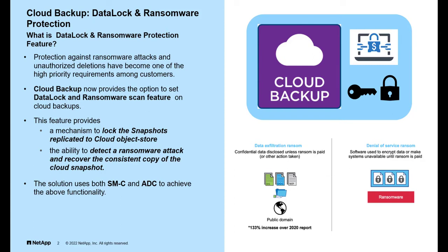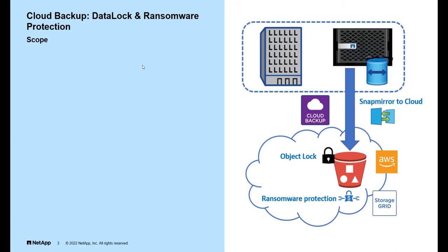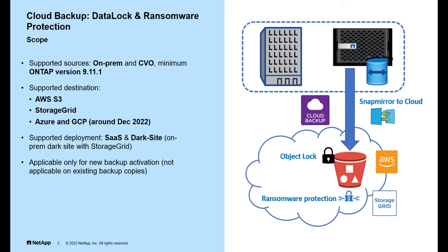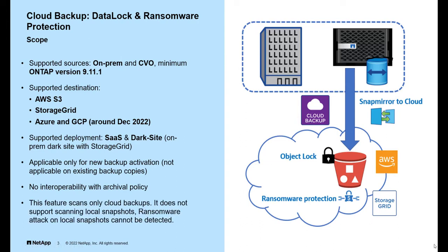Currently the feature is supported only for StorageGRID and AWS. Data lock and ransomware protection is supported on on-prem ONTAP clusters and Cloud Volumes ONTAP on versions 9.11.1 and above. It currently supports AWS S3 object store; StorageGRID will be supported in September 2022, and Azure and GCP object stores by December 2022. It is available on Cloud Manager SaaS and Cloud Manager dark site deployments. Note that this feature is applicable only for new activations, has no interoperability with archival policy, and scans only cloud backups — it does not support scanning local snapshots for ransomware attacks.